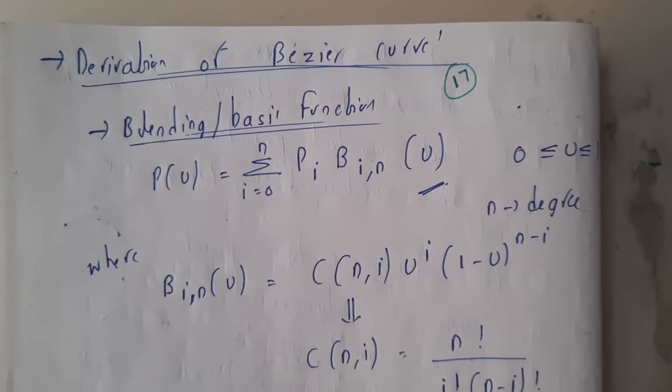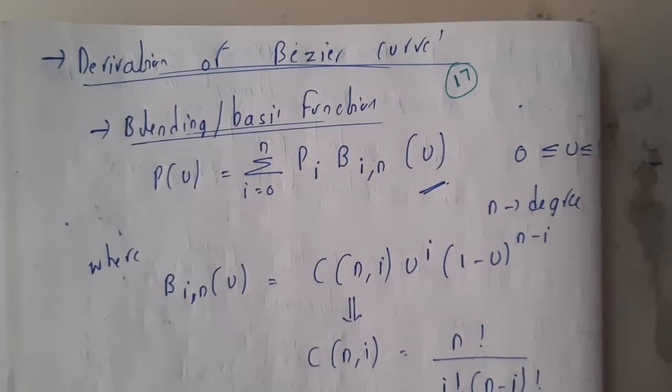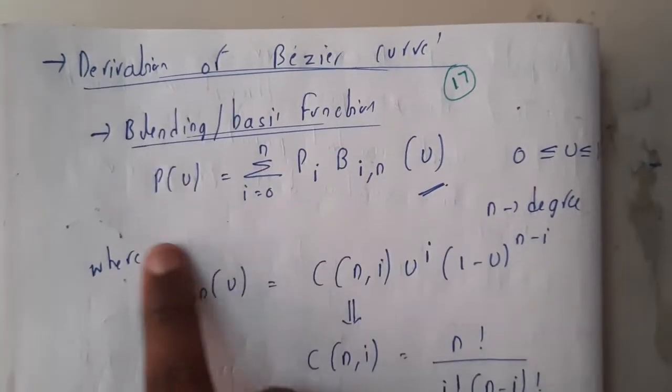They have just told that from the Bézier curve basic functions and given some one to two lines of explanation and just given the values of the expression. So we will be calling this function as a blending or basic function.